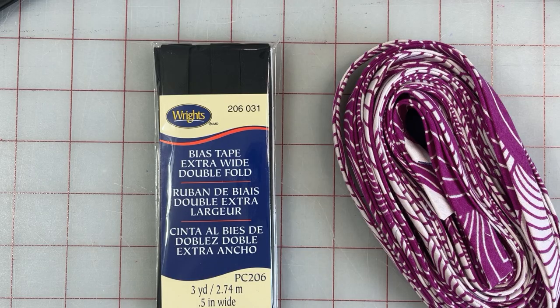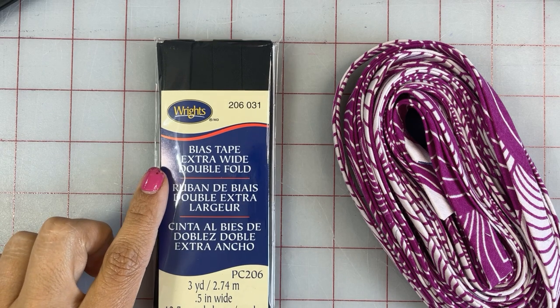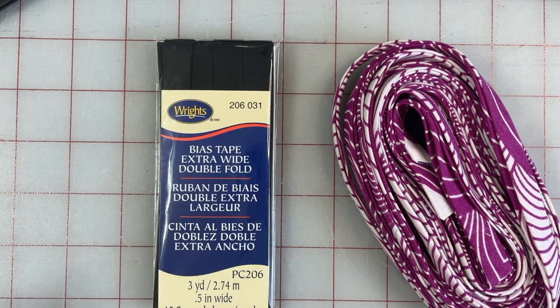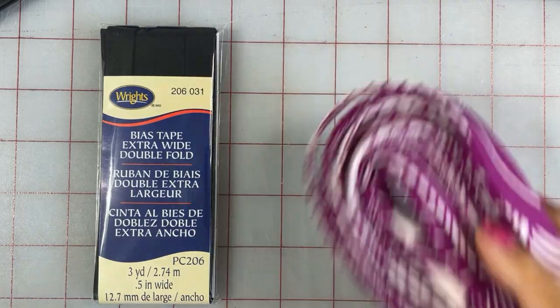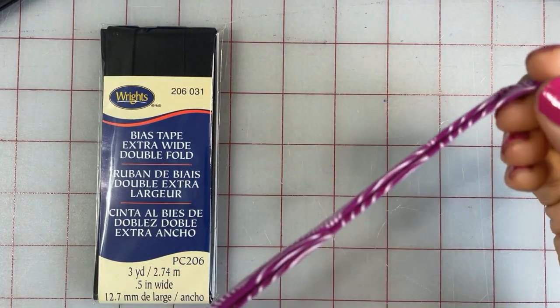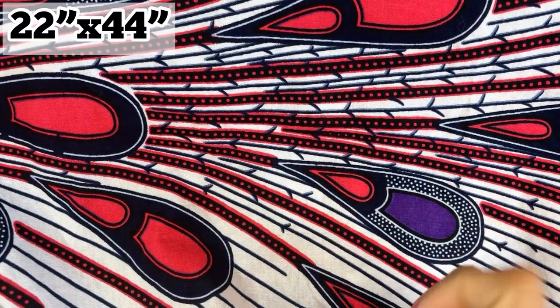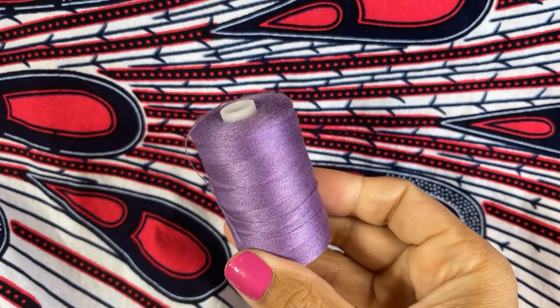You're also going to need bias tape. You can either get store bought bias tape like this one, which is extra wide, double fold. It's a half inch wide. Or you can consider making your own like I did here. And I'll be bringing you a bias tape tutorial tomorrow. You're going to need your fabric. This is 100% cotton and thread, of course.